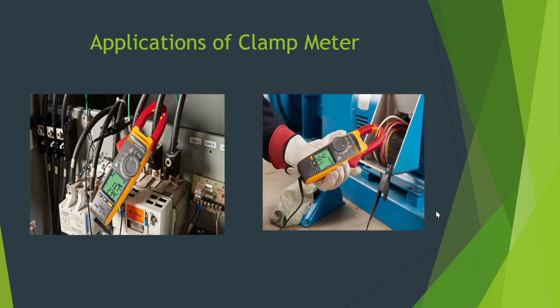Applications of clamp meter: Clamp meters are used in places where there is high current consumption. It is used in industrial, commercial and residential electrical systems. It is also used in HVAC systems. It is used while conducting repairs and maintenance in big power plants and electrical systems.